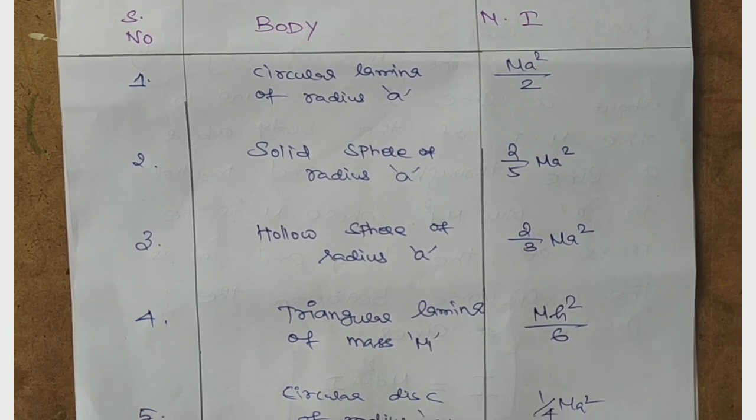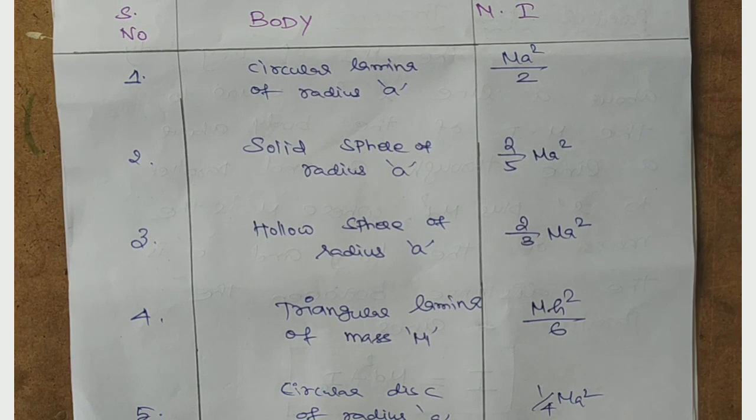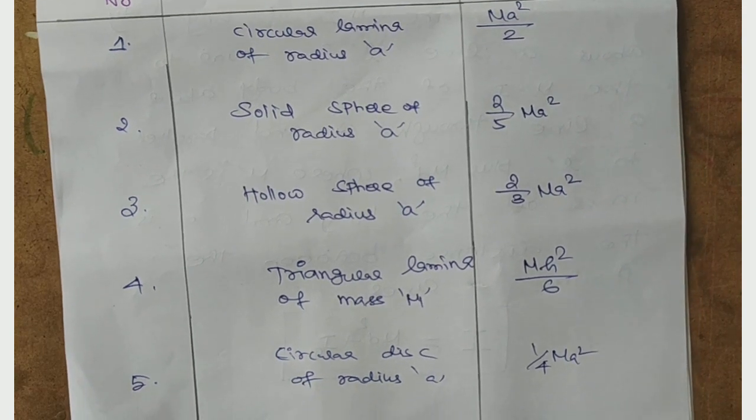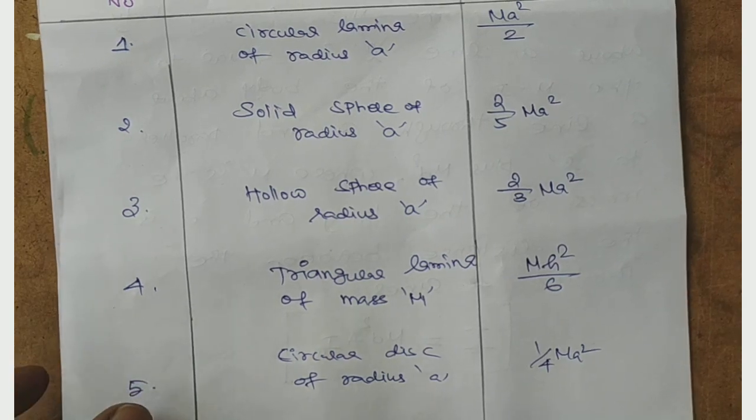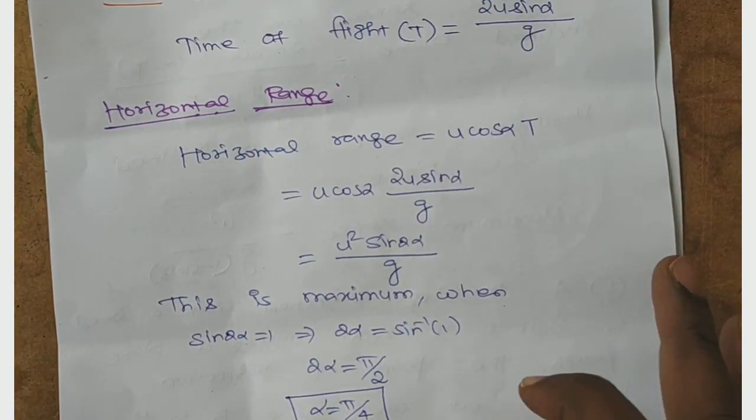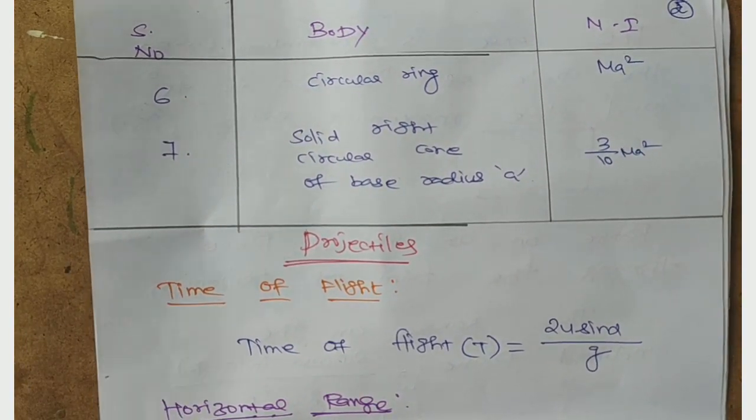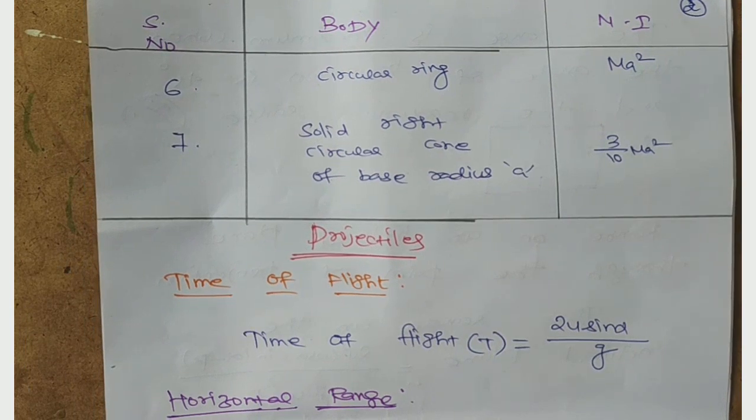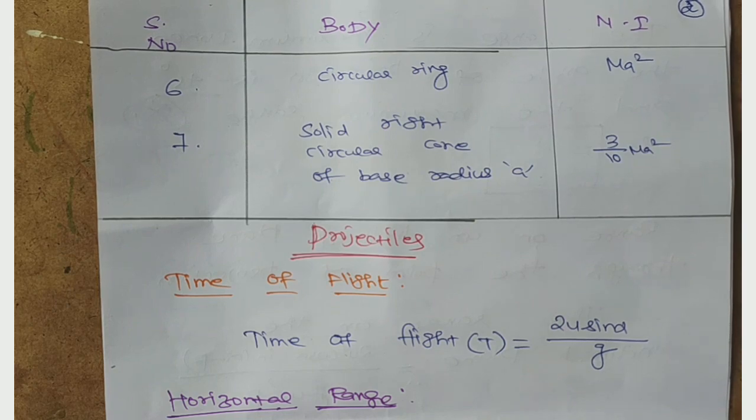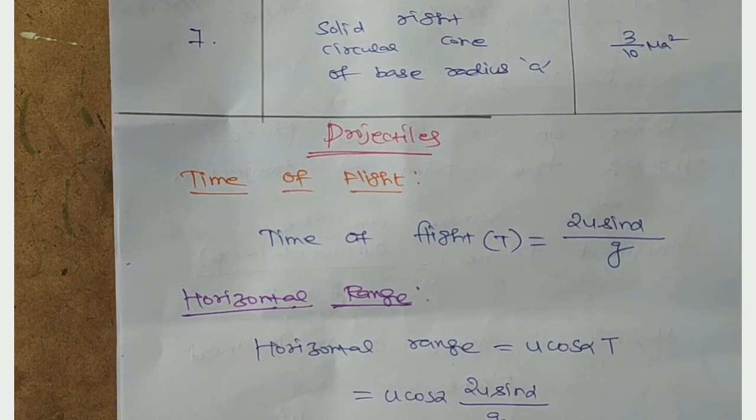Next, triangular lamina of mass M, moment of inertia is Mh²/6. Next, circular disk of radius a, moment of inertia is 1/4 ma². Next, circular ring, moment of inertia is ma². Solid right circular cone of base radius a, moment of inertia is 3/10 ma².